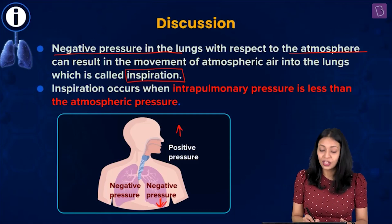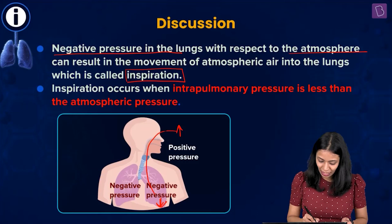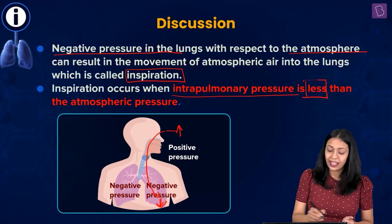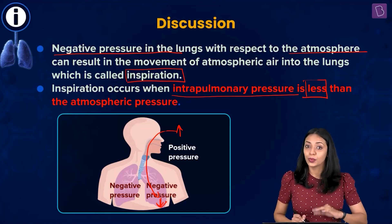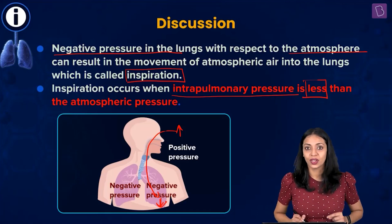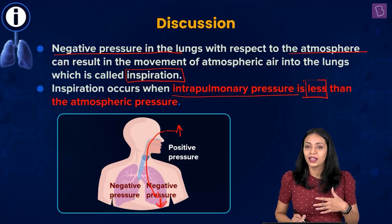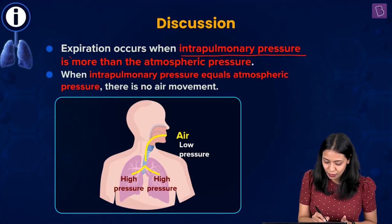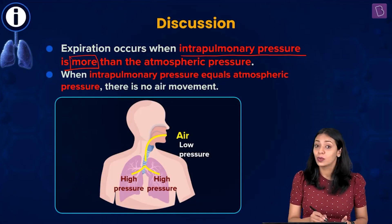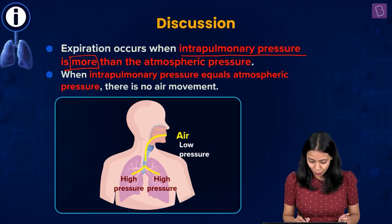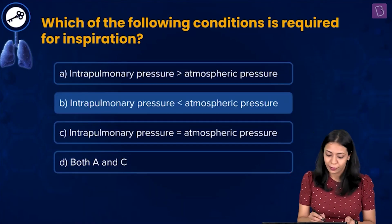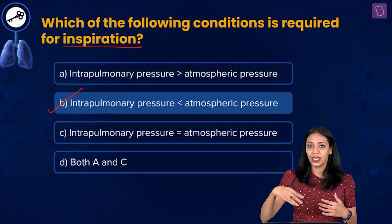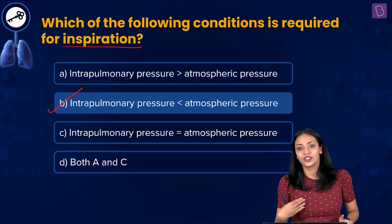Remember: atmospheric pressure is high, intrapulmonary pressure is less, and air moves from high pressure to low pressure — that movement is inspiration. Inspiration occurs when intrapulmonary pressure is less than atmospheric pressure. Conversely, if intrapulmonary pressure is greater than atmospheric pressure, air moves from the lungs to the atmosphere, which is expiration. When intrapulmonary pressure equals atmospheric pressure, there is no net movement of air. The correct answer is option B.